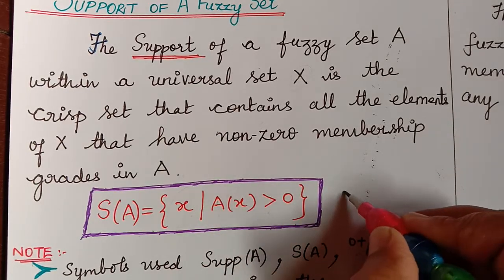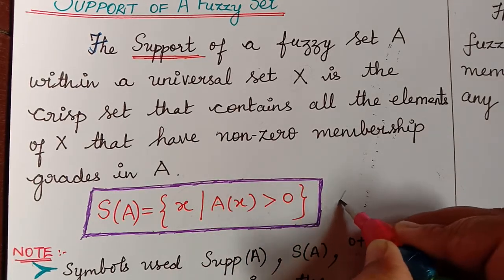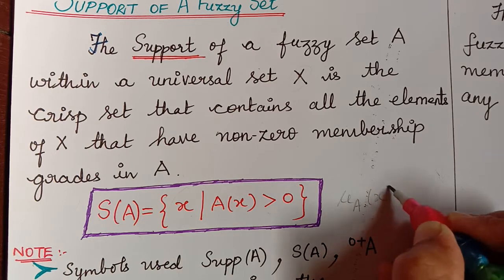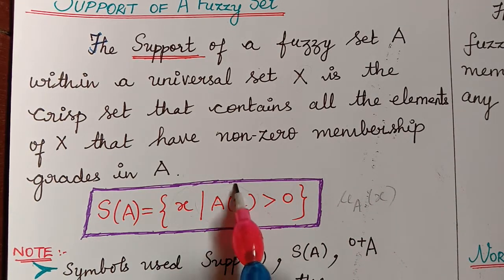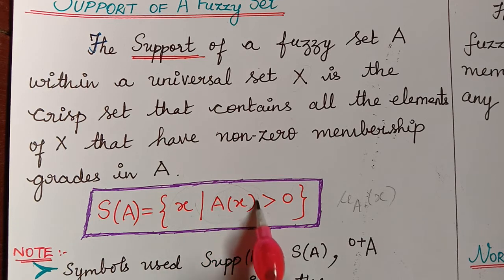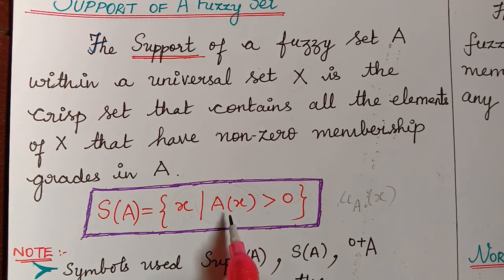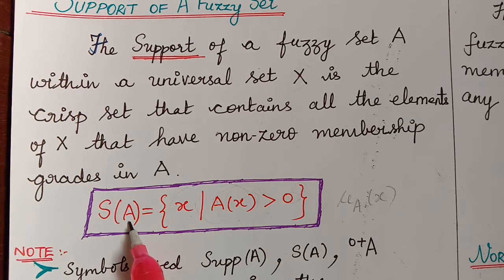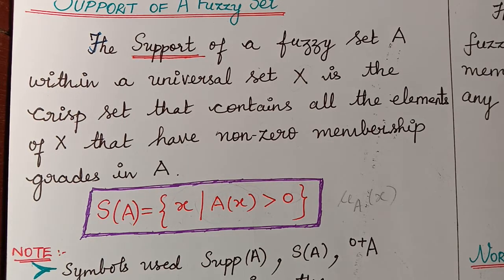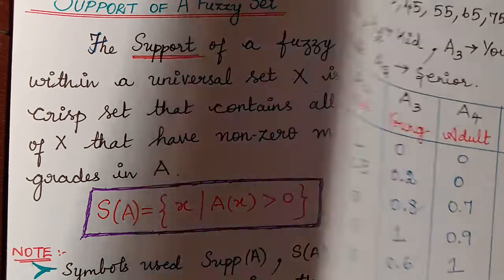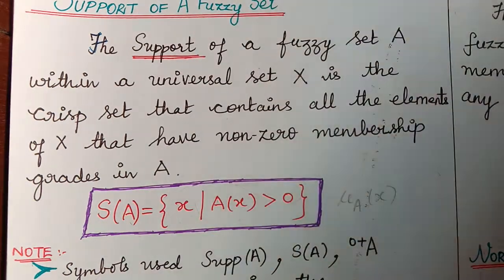Some textbooks represent it as mu_A(x), so any representation can be used. If the membership grades are strictly greater than 0, then those elements of that fuzzy set come under the support of A. Now we shall understand this better with an example.